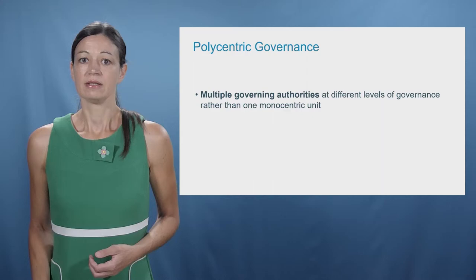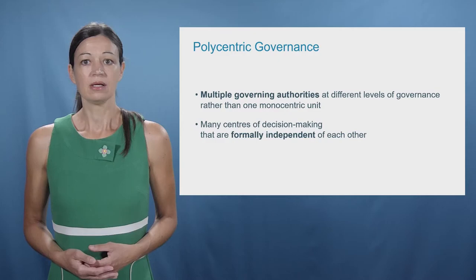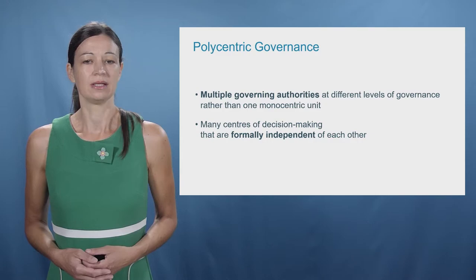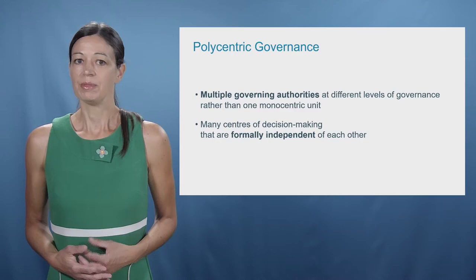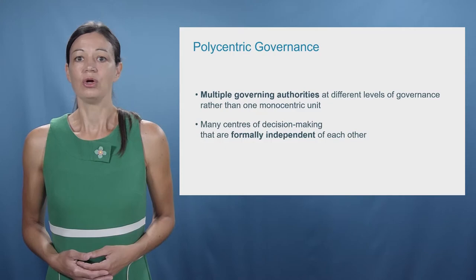The different authorities that adopt the policy measures are formally independent of each other. They do not force each other and are not forced by an external authority or treaty to adopt their policies. This is the difference to an international treaty or organization. But this does not mean that the individual decision-making centers don't influence each other — they do, on a voluntary basis through, for example, learning from each other.